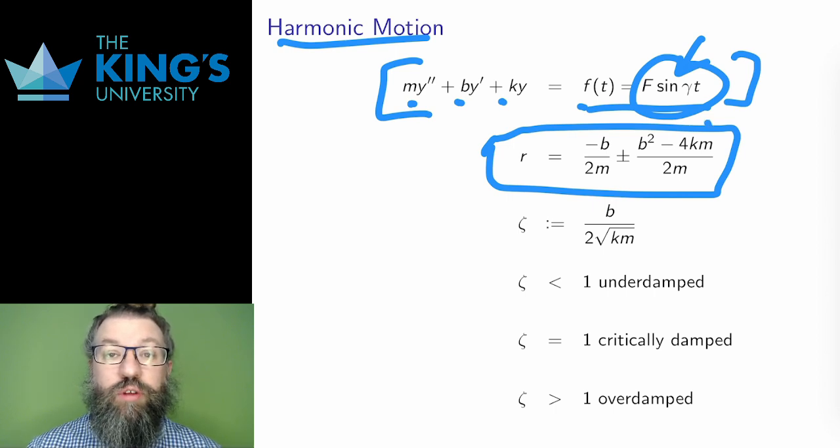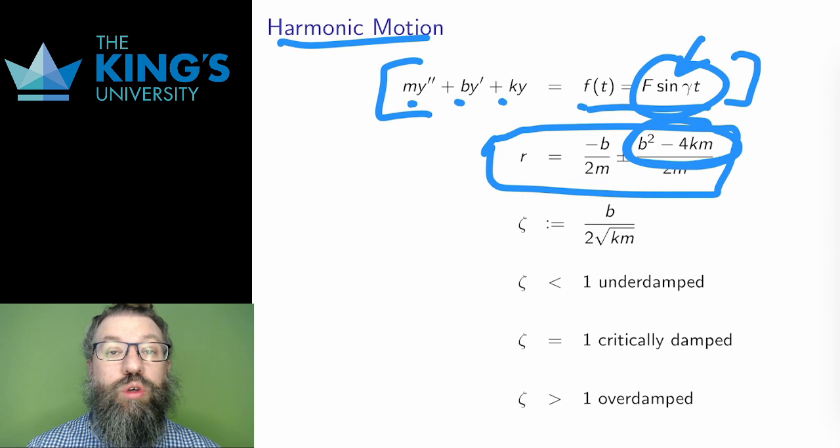Before, I looked at the discriminant of the quadratic, but now I want to define a new constant. Zeta equals B over 2 square root of Km to capture the behavior.